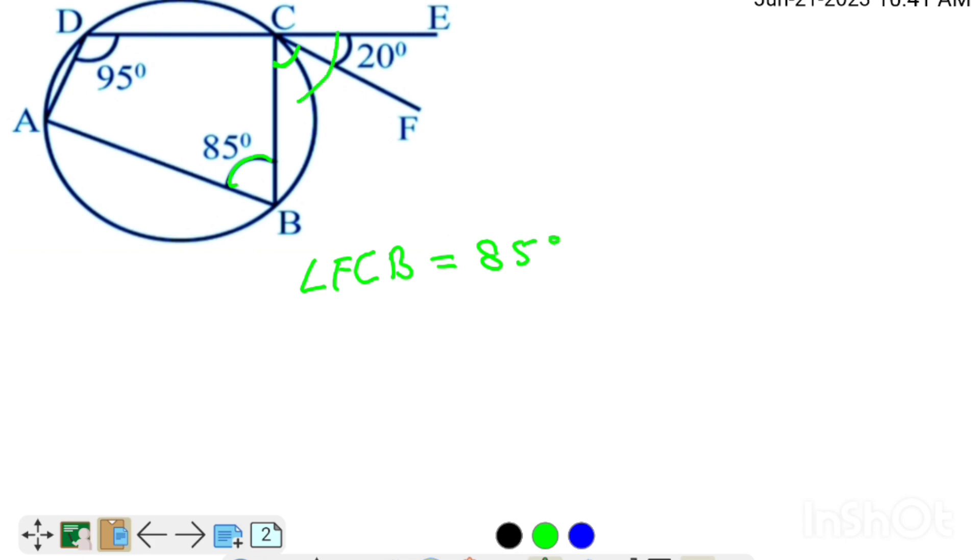This total angle ECB is equal to 85 plus 20 degrees, which will give 105 degrees.